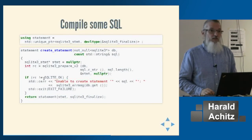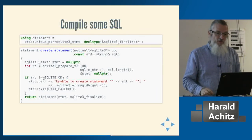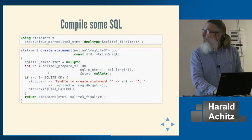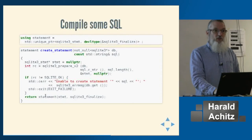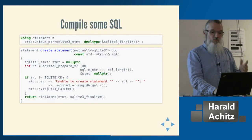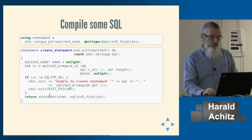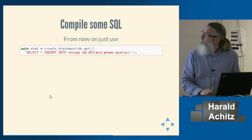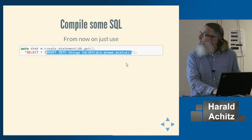In C++ we wrap the prepared statement the same way as the database connection — a unique_ptr with sqlite3_finalize as the deleter, called statement or whatever. The concept is the same: take the database, take a string view, encapsulate the sqlite3_prepare_v2 call, put the result in a unique_ptr and return it. This way we don't need to think about freeing resources, which matters because having open statements when you close a database can cause problems.